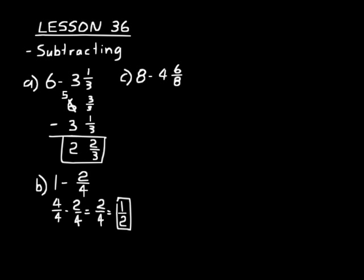Look at C, 8 minus 4 and 6 eighths. Now that one's a little more complex than B, so let's go ahead and rewrite it like we did in A. We'll put the 8 first. We'll put the 4 and 6 eighths below. We're subtracting that from 8. And we write our whole numbers above each other and our fraction parts above each other.